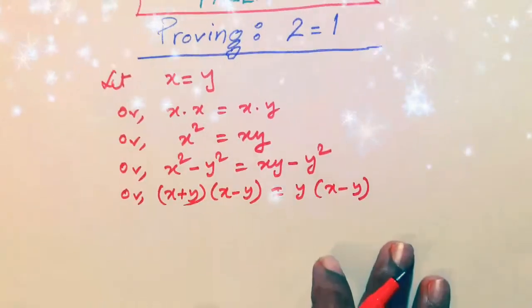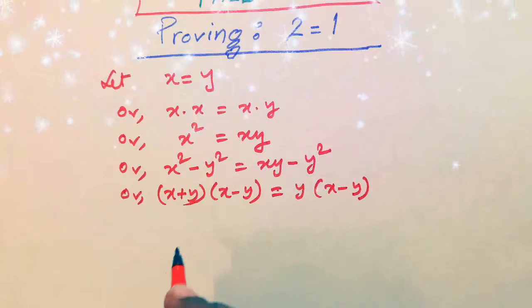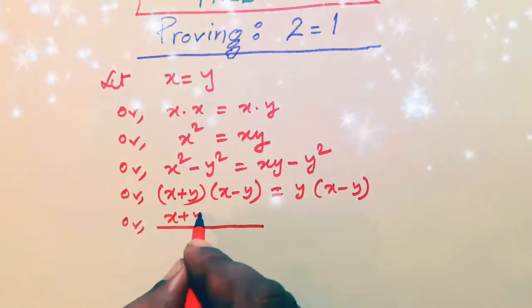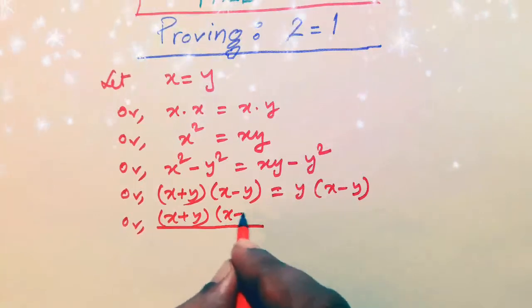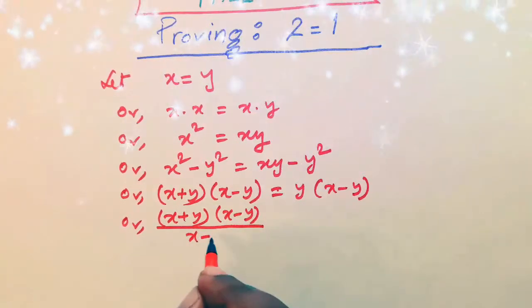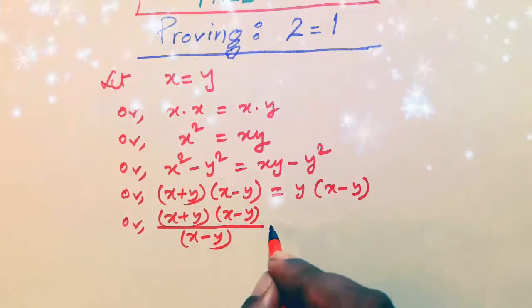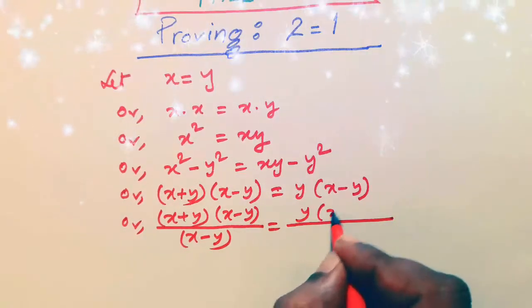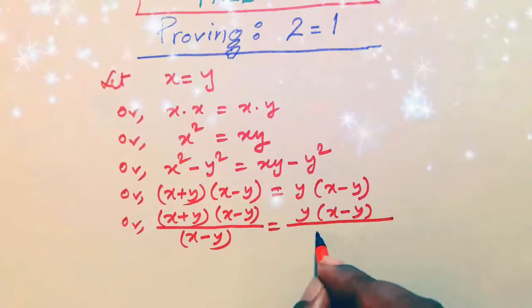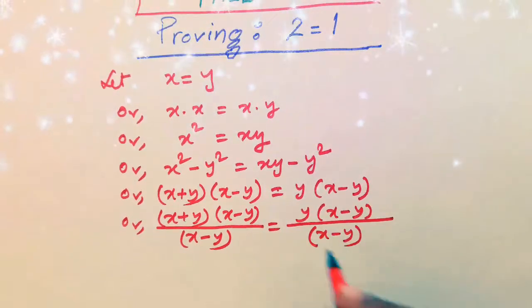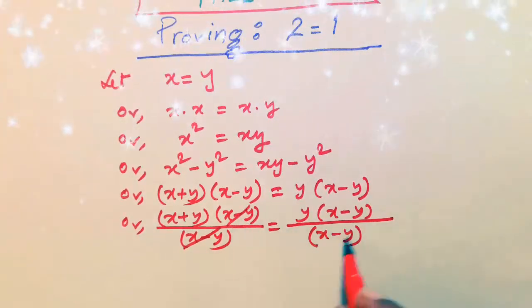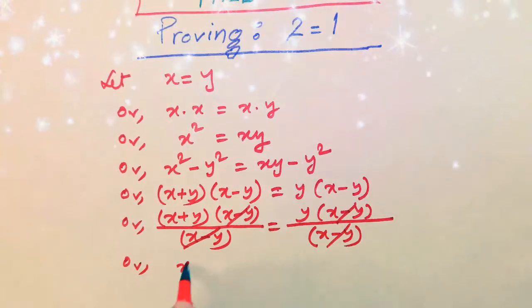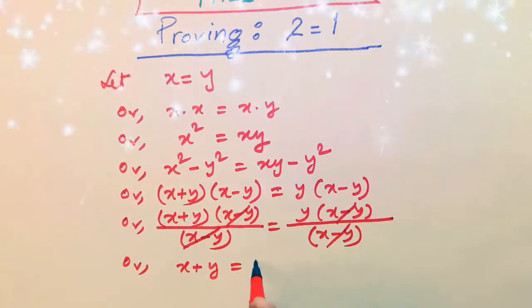So dividing both sides by x minus y, x plus y into x minus y divided by x minus y. That is also in the right side, y into x minus y divided by x minus y. So cancelling, we got x plus y is equal to y.